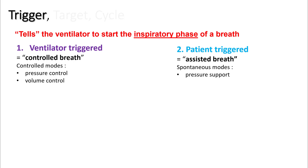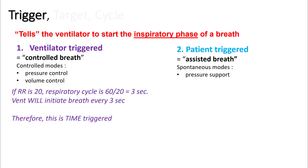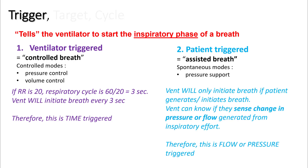Controlled breaths are given in control modes like pressure control and volume control, while spontaneous modes like pressure support are completely patient triggered. For example, if your respiratory rate is set at 20, your respiratory cycle is 3 seconds, so the ventilator will initiate a breath every 3 seconds — this is time triggered. In patient-triggered breath, the ventilator will only initiate a breath if the patient generates or initiates the breath. When someone initiates a breath, they generate negative intrapleural pressure which generates a positive flow, and these two parameters can be sensed by the ventilator. Therefore, patient-triggered breaths are either flow or pressure triggered.